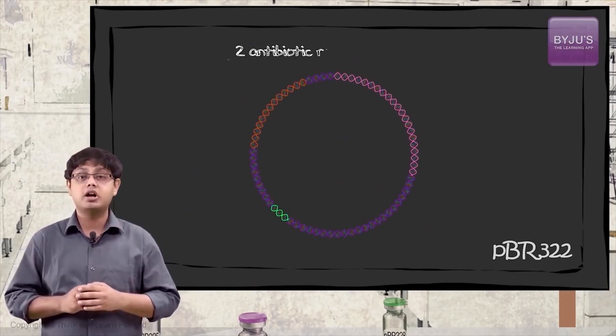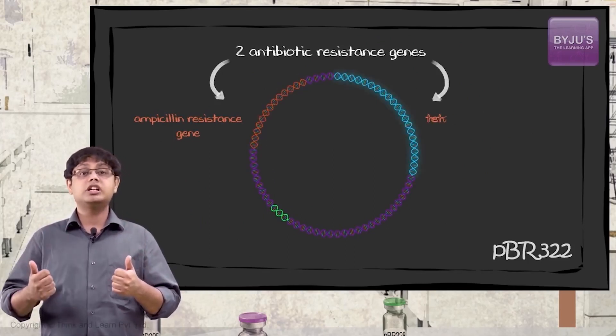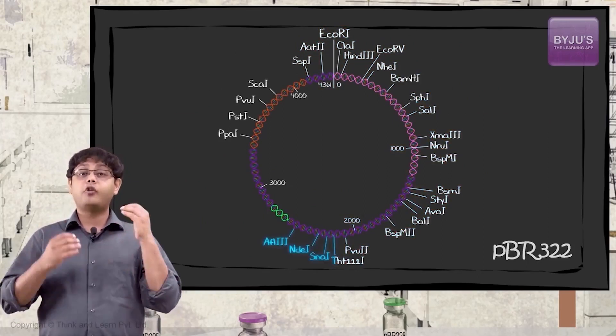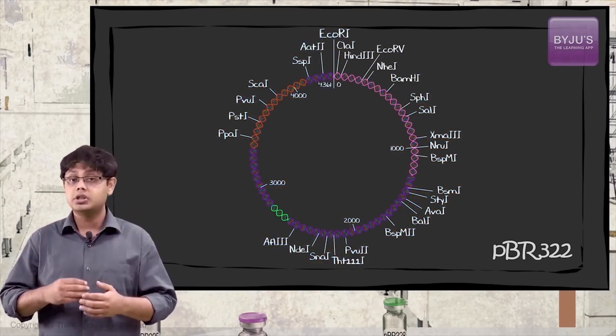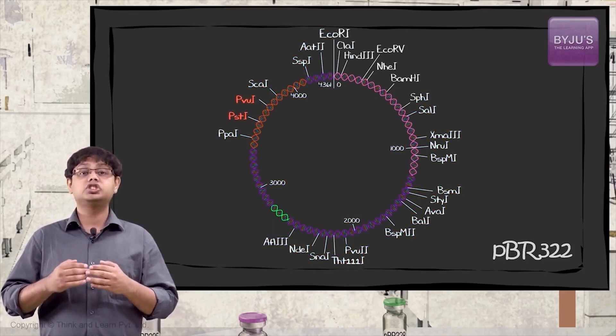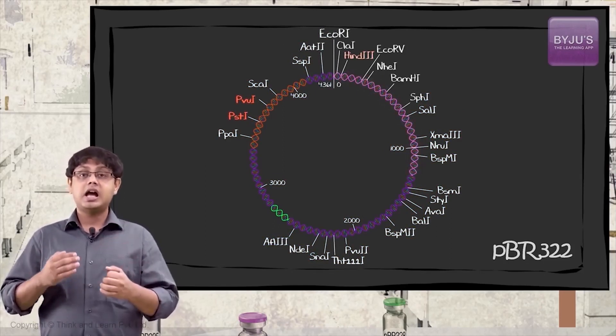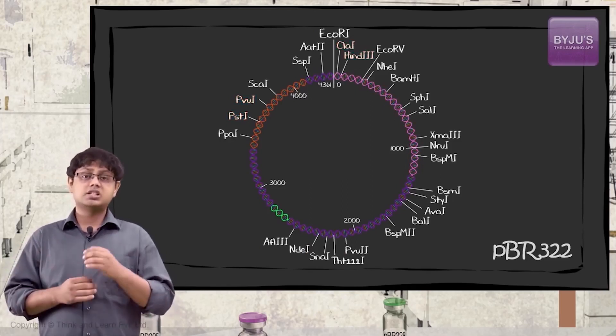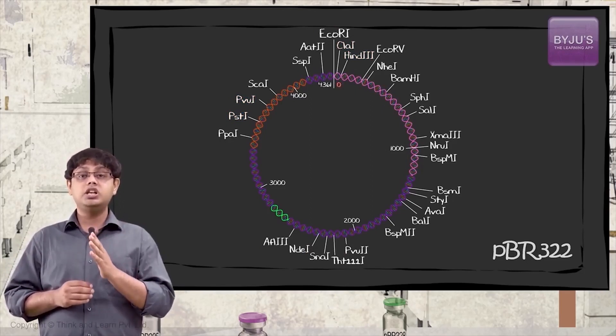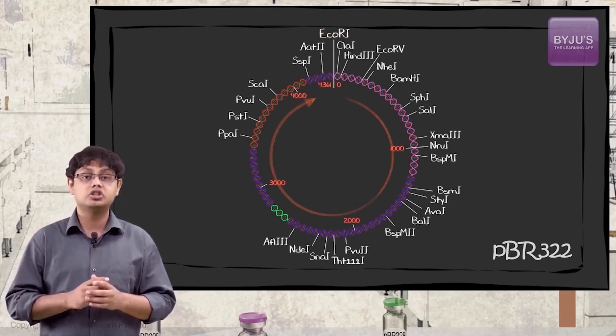It possesses two antibiotic-resistant genes: ampicillin-resistant gene and tetracycline-resistant gene. The plasmid has unique cloning sites for more than 40 restriction enzymes like PST1, PVU1, and there are two restriction sites for restriction endonuclease on the tetracycline-resistant gene: HIND3 and CLA1. The circular sequence is numbered such that 0 is in the middle of the unique ECO-R1 site and the count increases through the tetracycline-resistant gene.